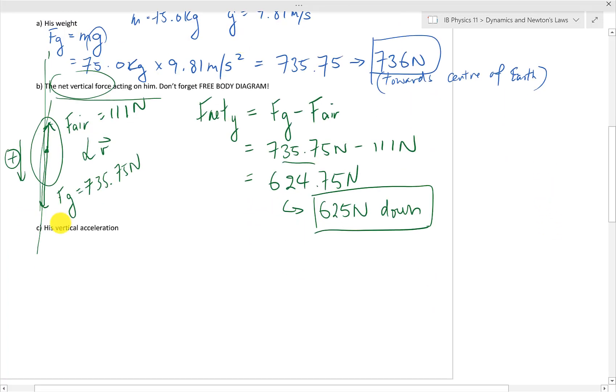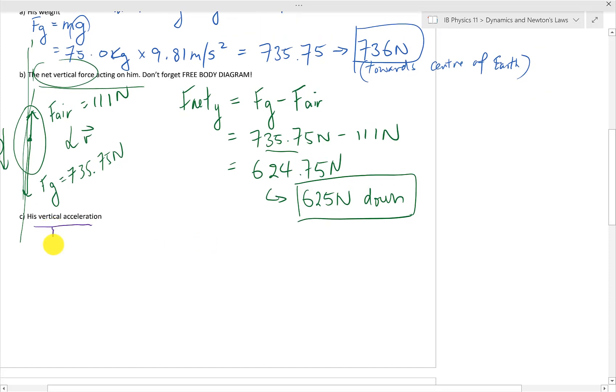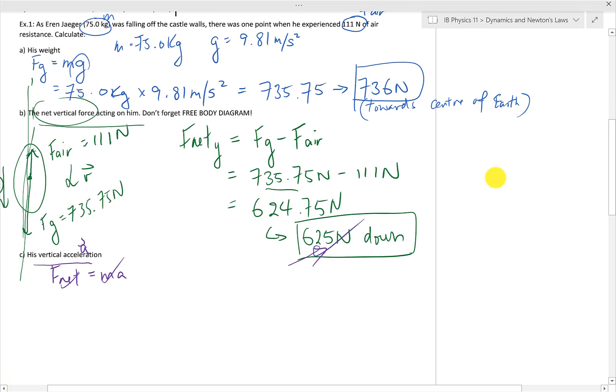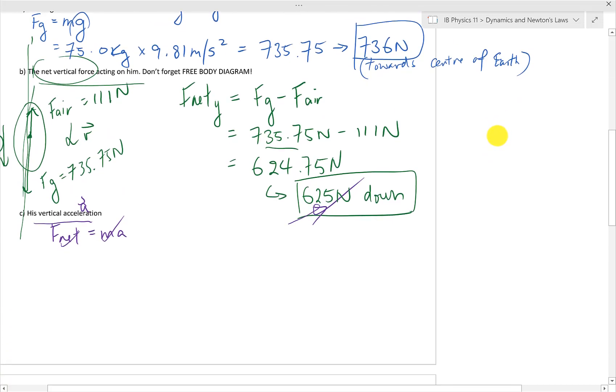Question C, we need to calculate his vertical acceleration. We know that F net is equal to ma. To find the acceleration, I need to know the mass and the F net. I do know the F net from the previous question right here. And as for the mass, it was given to me in the question already.